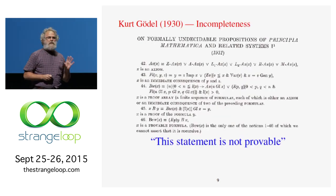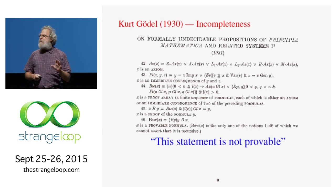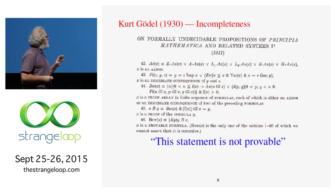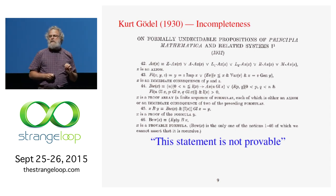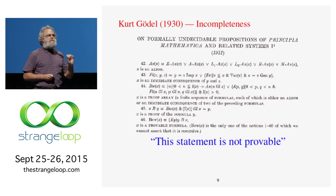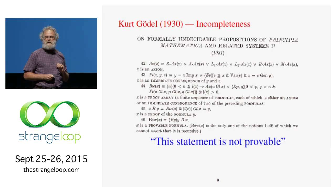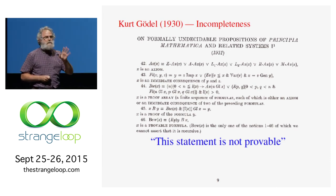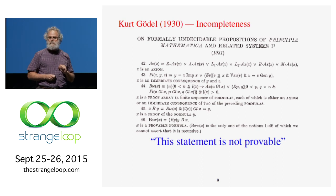What Gödel showed was that any logic powerful enough to represent arithmetic could encode the following statement: "this statement is not provable." The way he did this is he used a clever technique called Gödel numbering to encode statements and proofs as numbers, which is why he depended on arithmetic — and it is one of the world's first functional programs.